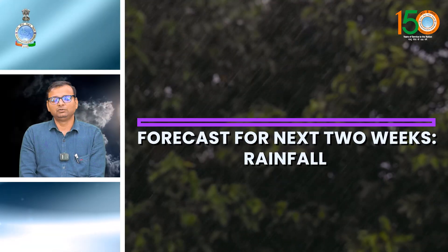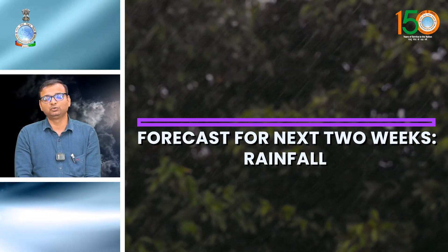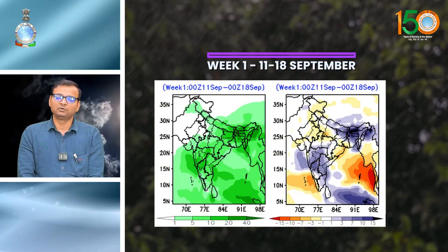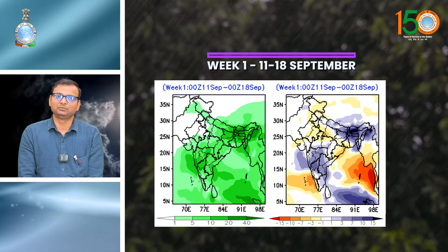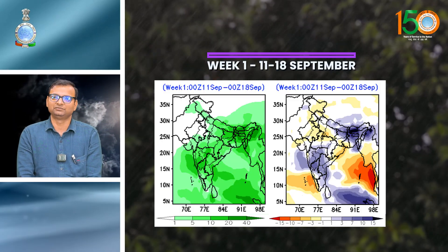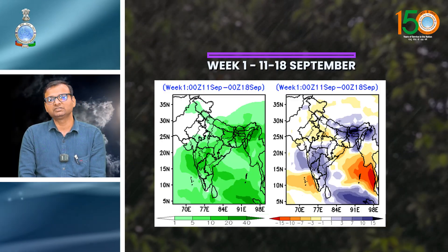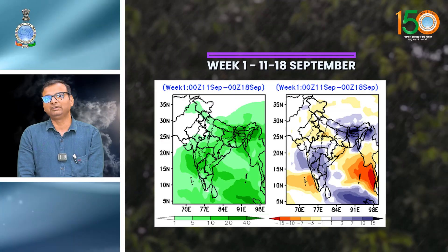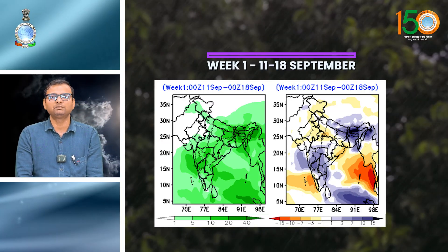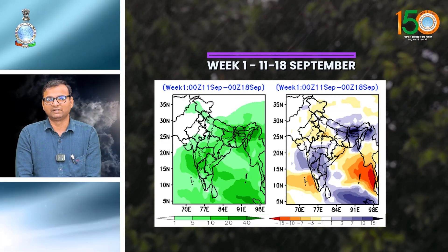Now if we look at the forecast for the next two weeks: by the end of this current week, that is from 11th September to 18th September, conditions will become favorable for the withdrawal of southwest monsoon from some parts of northwest India.